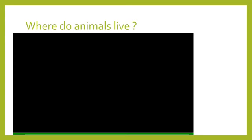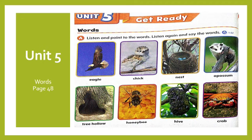Now we start our lesson. Take out page 48 — this is Unit 5. We start reading the words. Listen and point to the words, then listen again and say the words. You will read the words with me. Eagle. Chick. Nest. Opossum. Tree hollow. Honeybee. Hive. Crab.